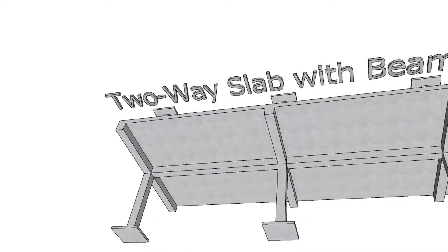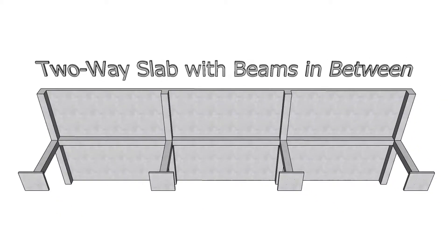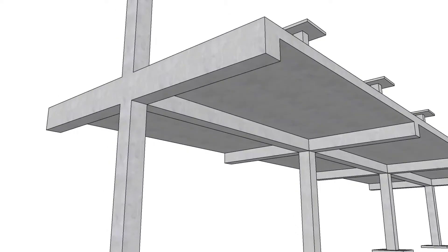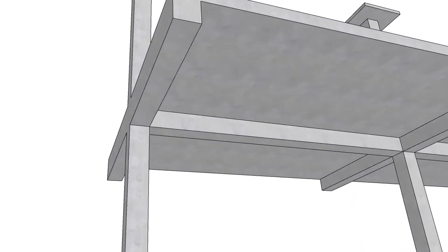Slab on beams floor system is a two-way concrete slab supported on longitudinal and traverse beams where the beams are supported by columns, with reinforcement in two orthogonal directions.